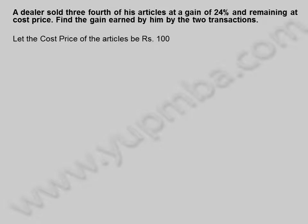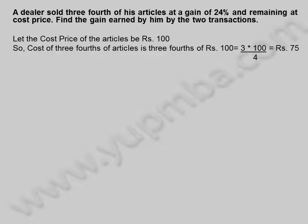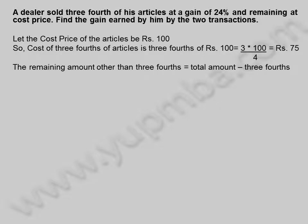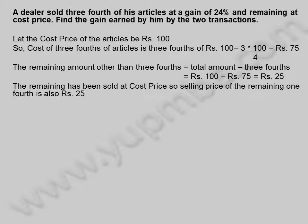A dealer sold 3/4 of his articles at a gain of 24% and the remaining at cost price. Find the gain earned by him by the two transactions. Let the cost price of the articles be 100 rupees. Cost of 3/4 of articles is 75 rupees. The remaining amount is 100 rupees minus 75 rupees, equal to 25 rupees. The remaining has been sold at cost price, so the selling price of the remaining 1/4 is also 25 rupees.